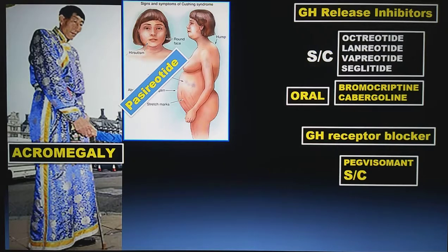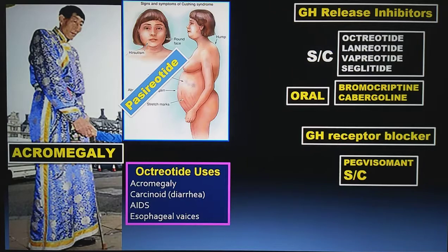Looking at the somatostatin analogues — octreotide, lanreotide, vapreotide, and ciglitide — octreotide is very important because it is useful not only for acromegaly but also for many other conditions. For example, in carcinoid tumour, a serotonin-secreting tumour where excess serotonin causes diarrhoea, the best drug for treating secretory diarrhoea caused by carcinoid tumour is octreotide.